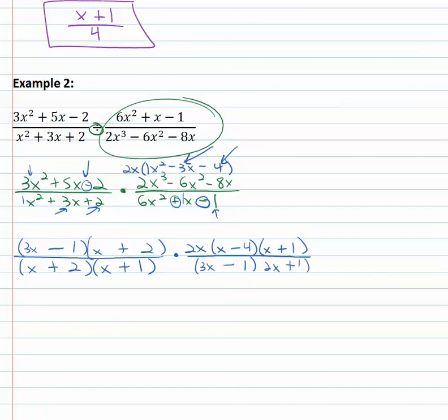Big exercise in factoring. Once the factoring is done, it's easy from here looking for common factors. We see 3x minus 1 dividing out of the numerator and denominator. There's also an x plus 2 to divide out of the numerator and denominator. There's also an x plus 1 divides out of the numerator and denominator. With nothing else in common, our final answer in the numerator is 2x times x minus 4 all over 2x plus 1.